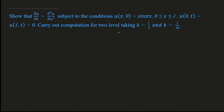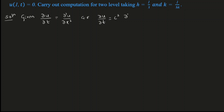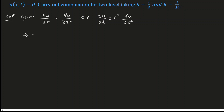Now, we need to solve this equation ∂u/∂t = ∂²u/∂x². We write down the given equation as solution. The general form of the heat equation is ∂u/∂t = c² · ∂²u/∂x². When you compare these two equations, in place of c², we have 1. So, c² = 1.